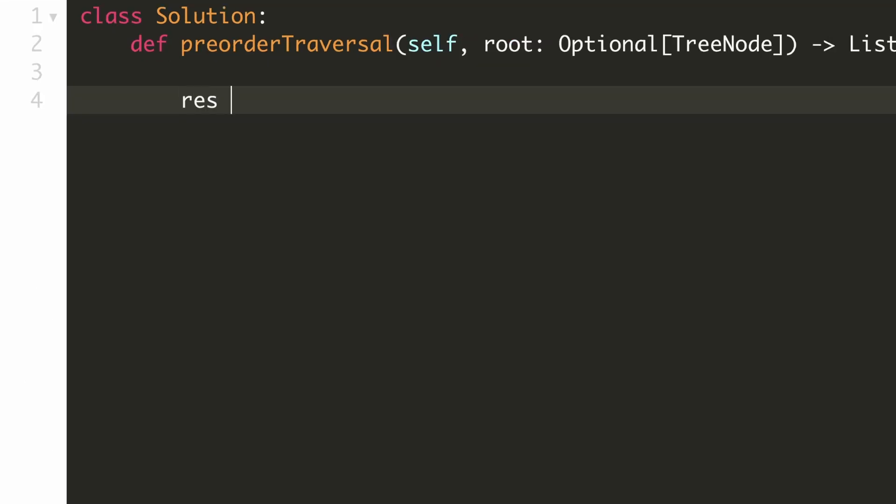Just like our previous solution, we'll maintain a result variable to store our output. In this solution, we have to maintain a stack and we'll initialize it with the root. We'll keep on repeating this process till our stack is not empty.